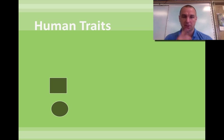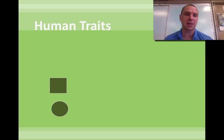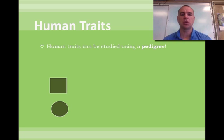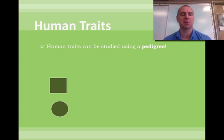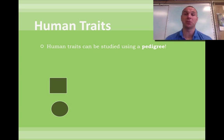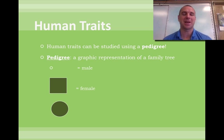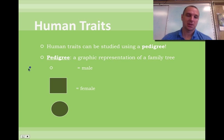Now let's go right into pedigrees. Tomorrow you're going to probably do a pedigree in class. Human traits can be studied by pedigrees — and no, it's not a type of dog food. A pedigree is actually a graphic representation of a family tree. In a pedigree, males are represented by squares and females are represented by circles.